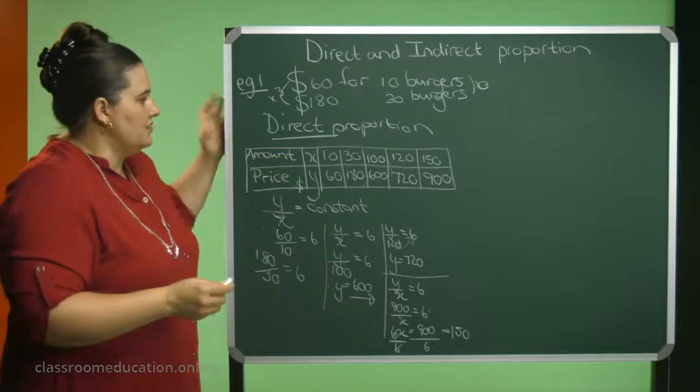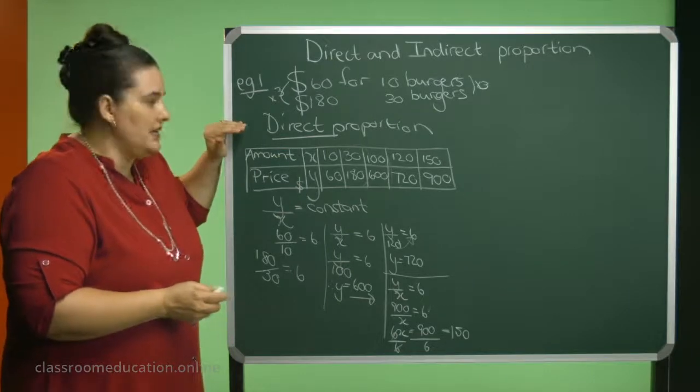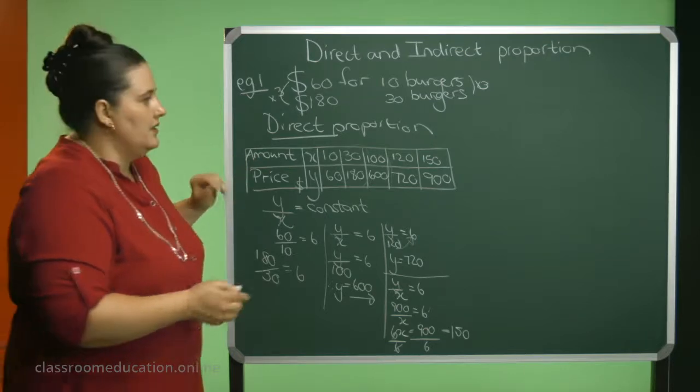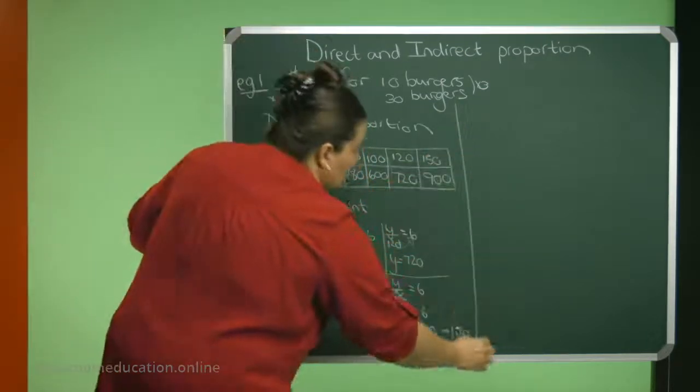So just again, direct proportion. If the one increases, the other one will also increase. Let's have a look at another example.